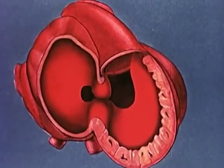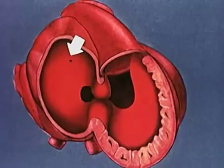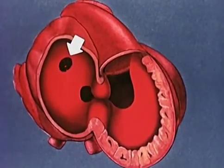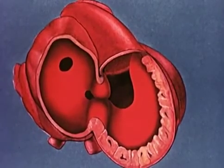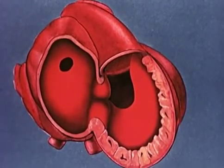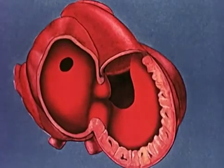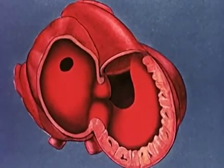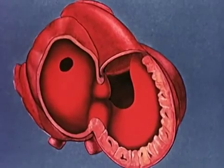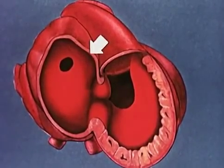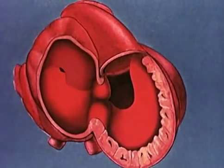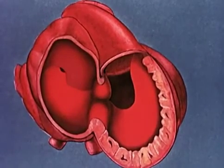Before the foramen primum becomes obliterated, a new opening appears high on the interatrial septum. The timely development of this orifice, the foramen secundum, provides uninterrupted shunting of blood from the right atrium directly into the left. Another interatrial septum, the septum secundum, develops from a ridge just to the right of the septum primum and extends down like a curtain over the interatrial penetration.